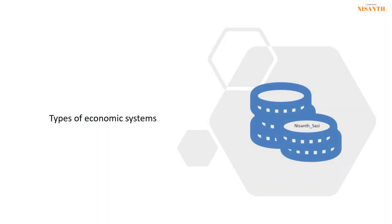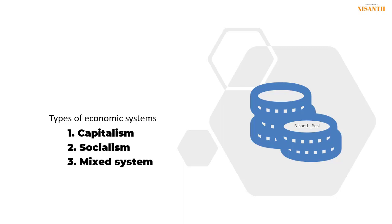Basically, economic systems fall into three categories: the first is capitalism, the second is socialism, and the third is the mixed system. In capitalism, productive resources — the factors of production such as land, labor, capital, and organization — are owned and operated by private individuals rather than the government.